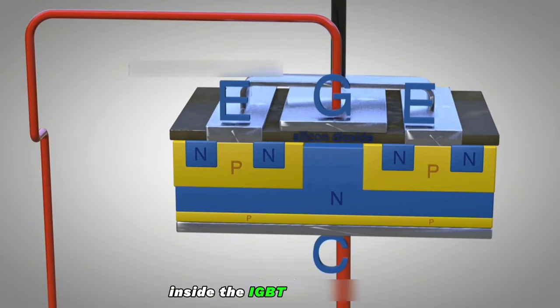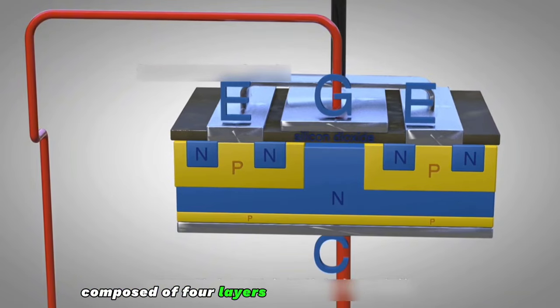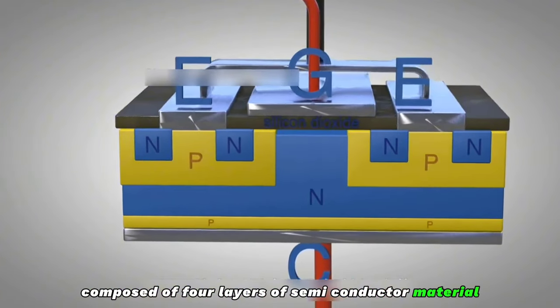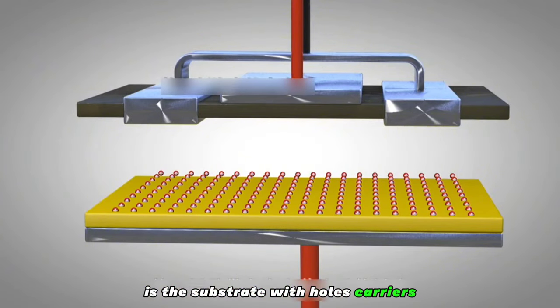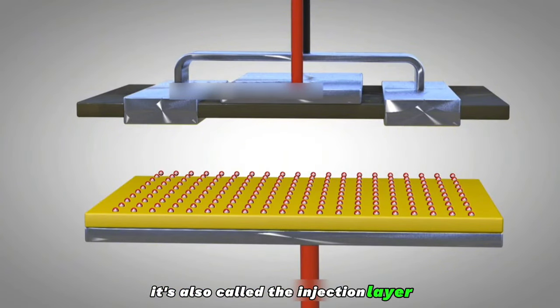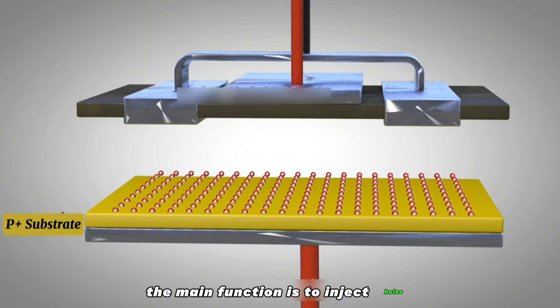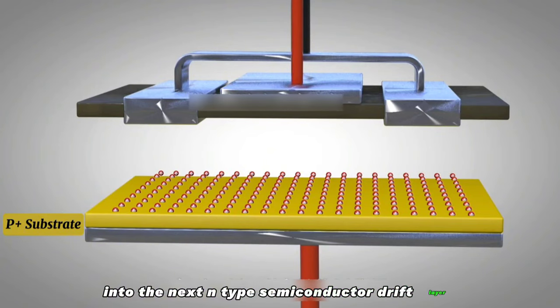Inside the IGBT is a collector composed of four layers of semiconductor material. The first layer on the collector is the substrate with hole carriers. It's also called the injection layer. The main function is to inject holes into the next N-type semiconductor drift layer.